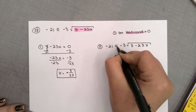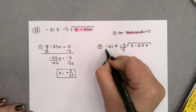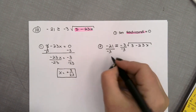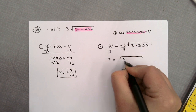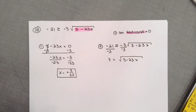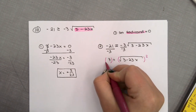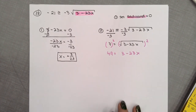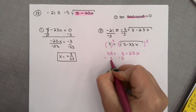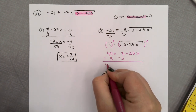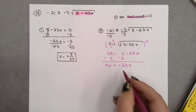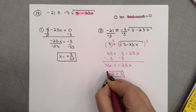Square both sides: 49 equals 3 minus 23x. Subtract 3: 46 equals negative 23x. Divide by negative 23: x equals negative 2. Again, pause — don't do anything with this value yet. Step 3: test on a number line. Draw a number line and place your two x values: negative 2 on the left and 3/23 (approximately a little over 0) on the right. This creates three sections to test.